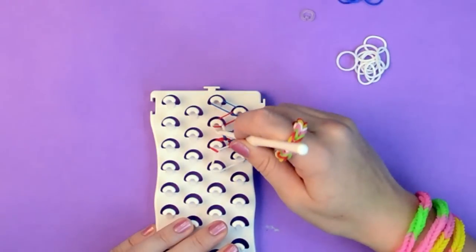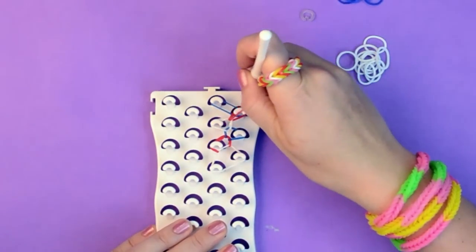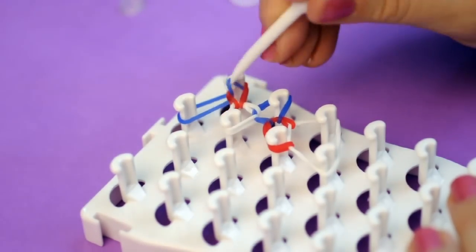Then pick the next band up from the middle of the next pin's U-shape and hook it over the next pin. Repeat this pattern all the way down the loom.